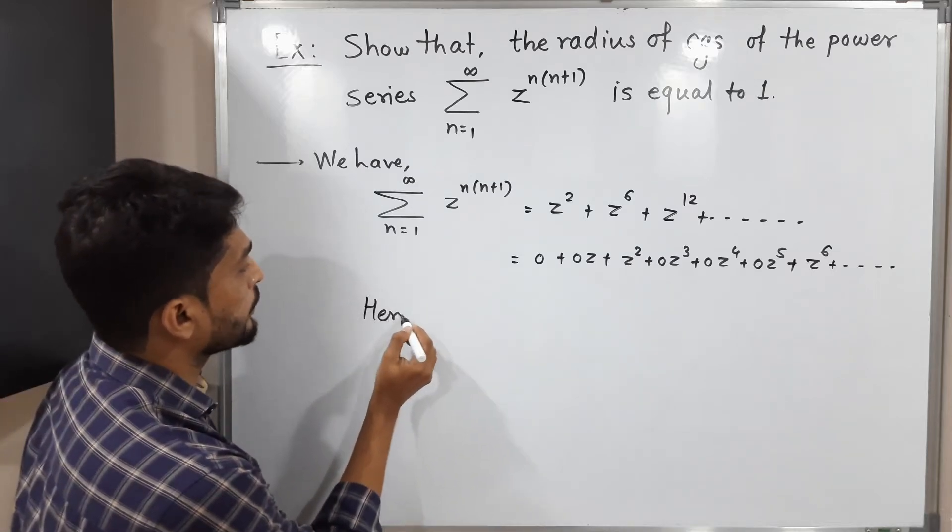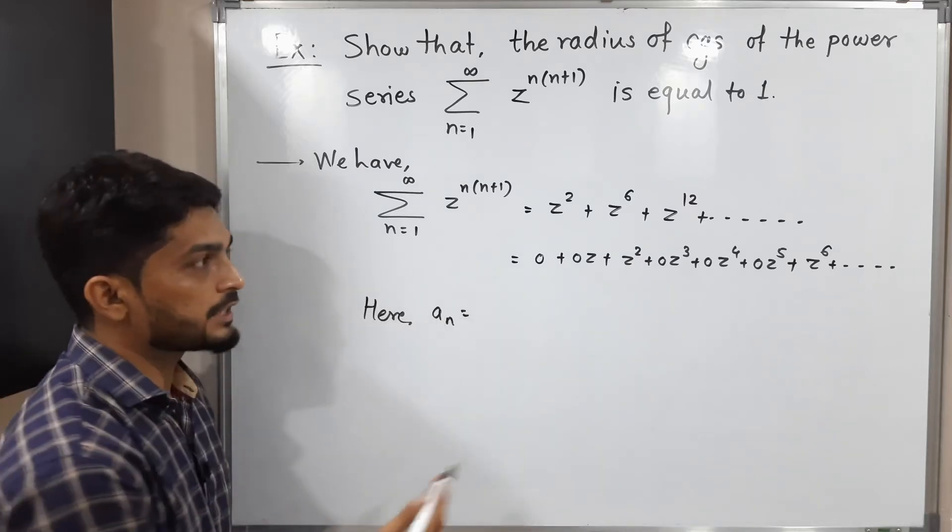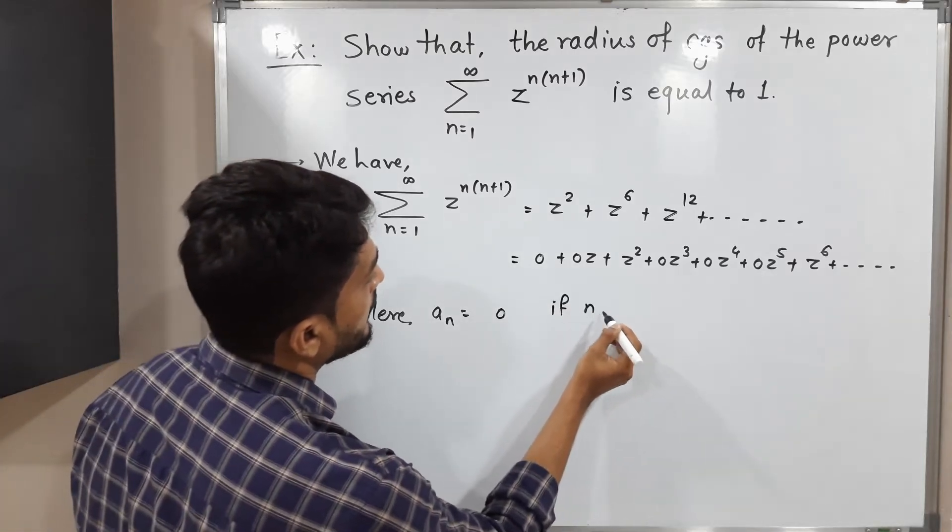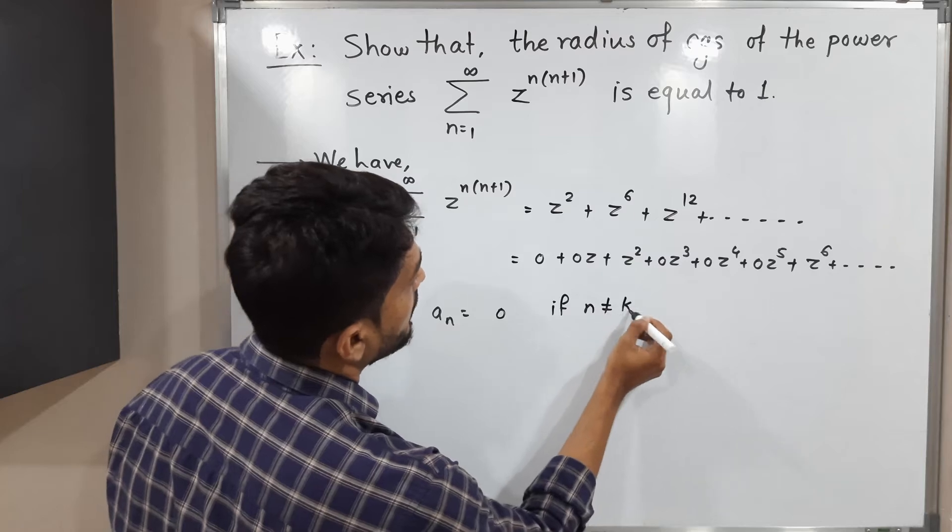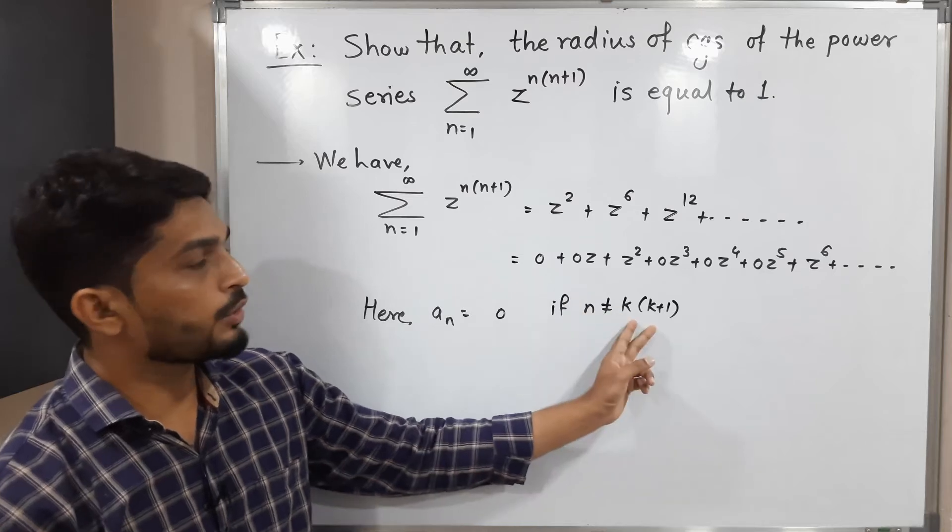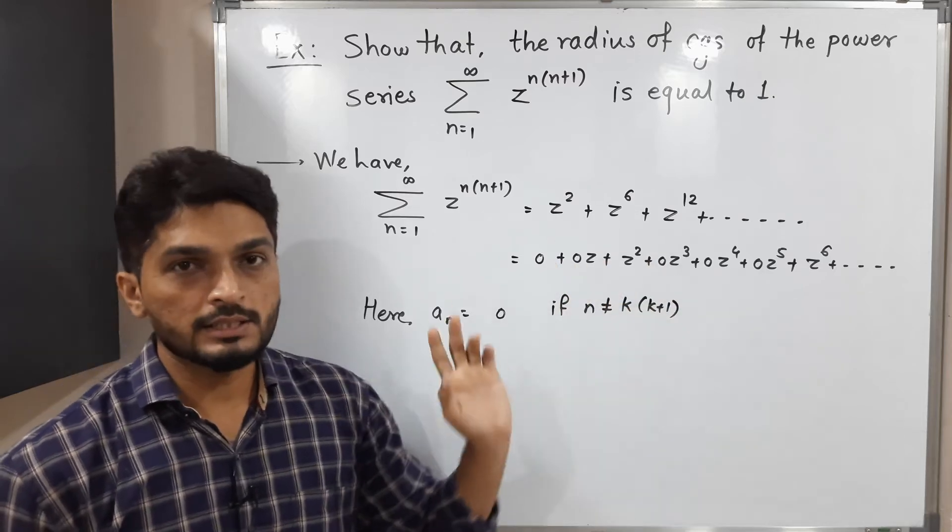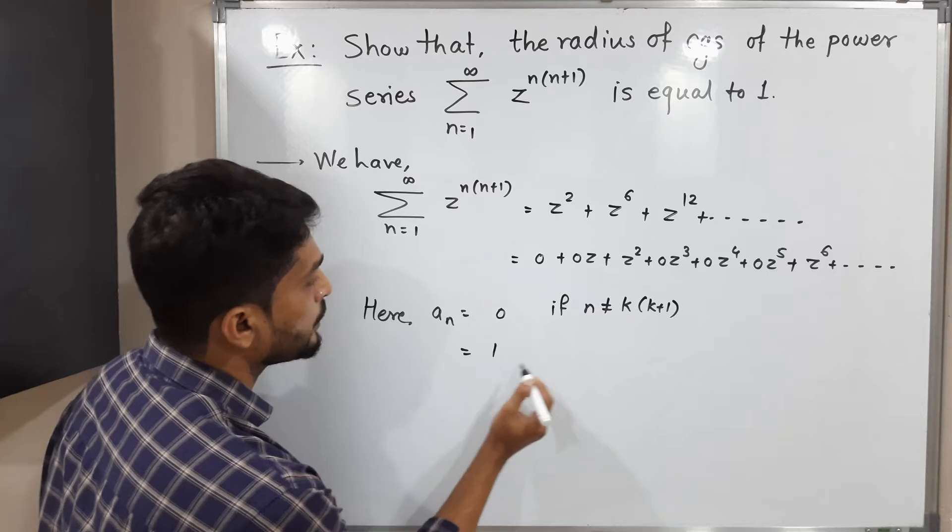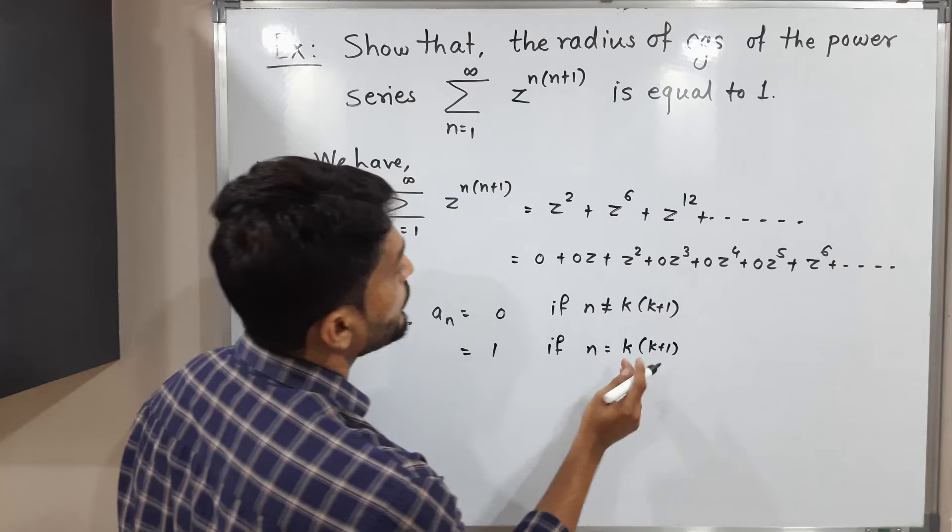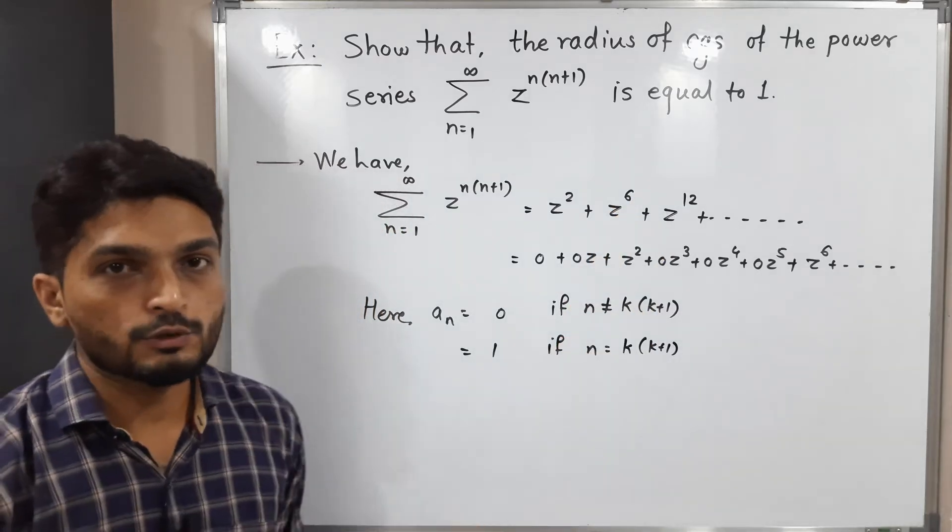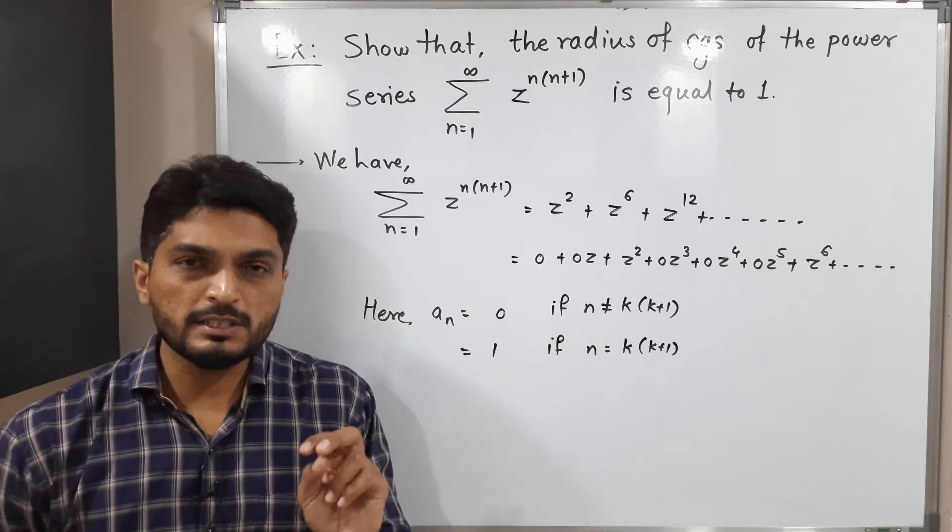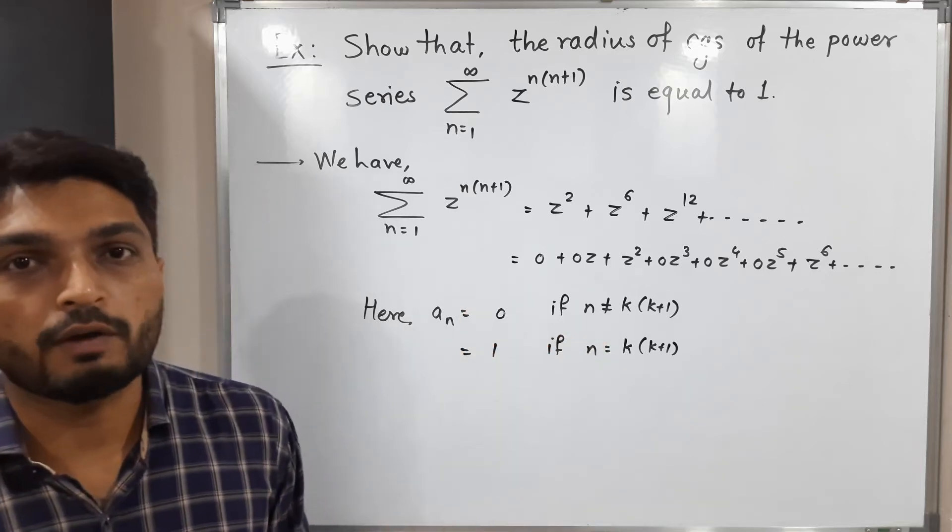It means here a_n, that means the coefficient of z raised to n. So here a_n is 0 if n is not equal to k times (k+1). That means if the power n is not equal to this form, then the coefficient of z raised to n is 0. And it is equal to 1 if n equals k times (k+1). That means when you have the power in this form, then only you will have its coefficient 1, otherwise its coefficient will be 0. That means a_n has two different values for different values of n.